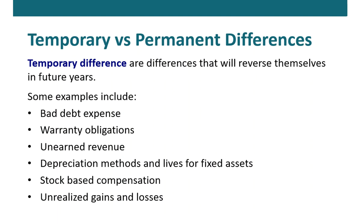Under the IRS tax code, we don't write off bad debt expense until we actually tear up the receivable and decide we're not going to be paid by a particular customer. Warranty obligations for tax purposes, we record the expense when we actually perform the repair. And in terms of unearned revenue, generally we report revenue for tax purposes when we collect cash from the customers.